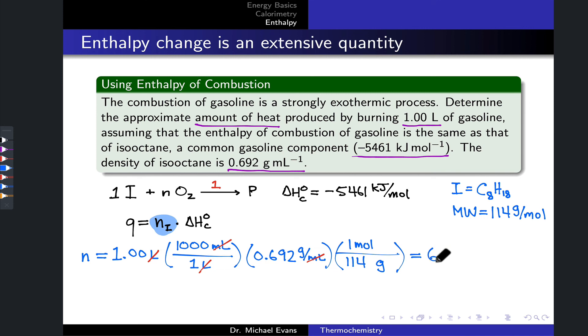This comes out to 6.07 moles. To finish the calculation, we simply plug in this number of moles with our known enthalpy of combustion. This comes out to negative 3.31 times 10 to the fourth kilojoules. So combustion is an exothermic process, and the enthalpy change tells us that. This is quite a lot of heat generated in the combustion of isooctane.